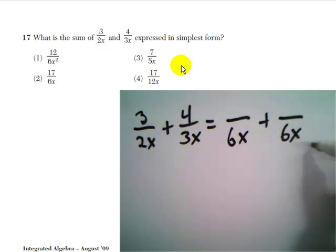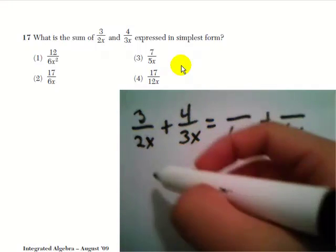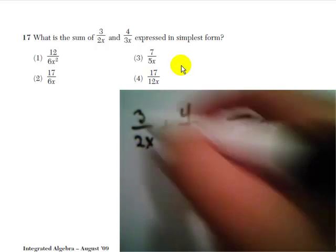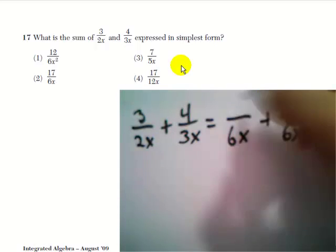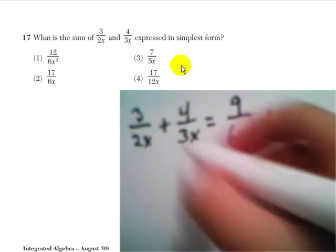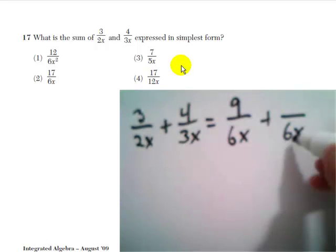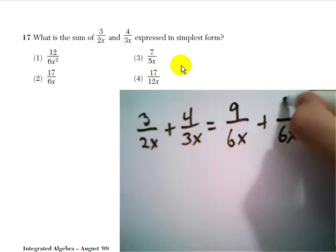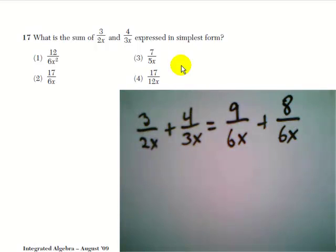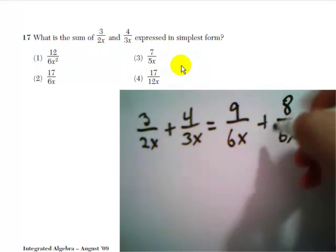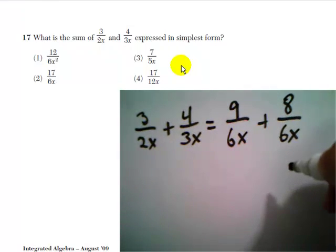So if we're using 6x as a common denominator: 2x times 3 gives us 6x, so 3 times 3 gives us 9. And 3x times 2 gives us 6x, so 4 times 2 gives us 8. That gives us 9 over 6x plus 8 over 6x.